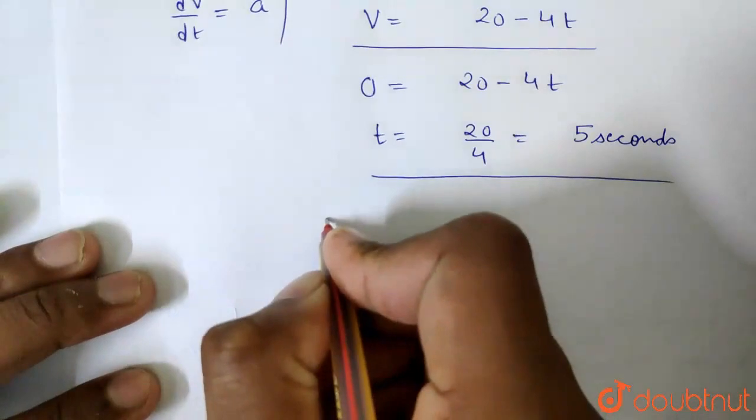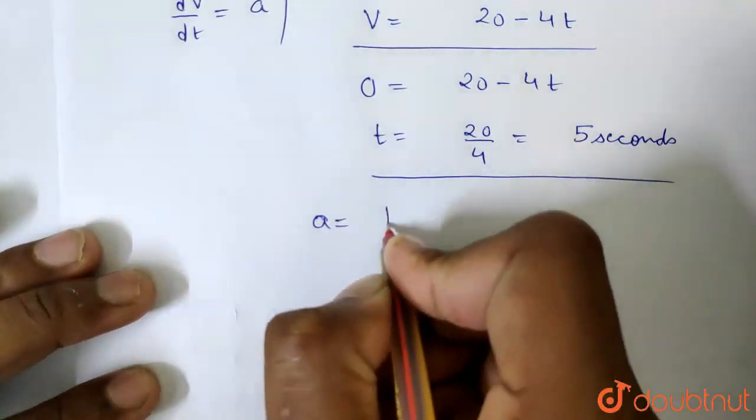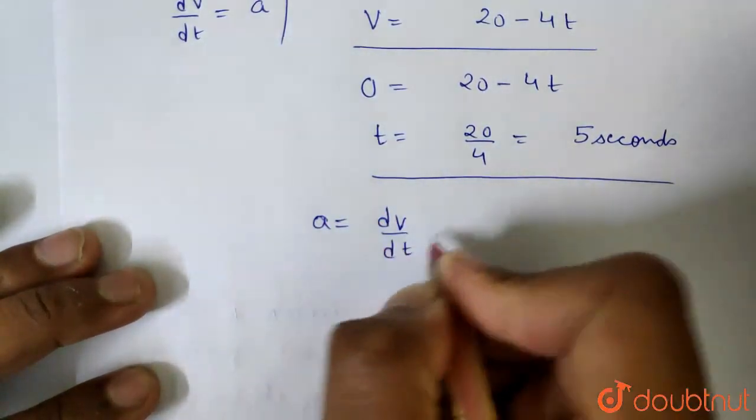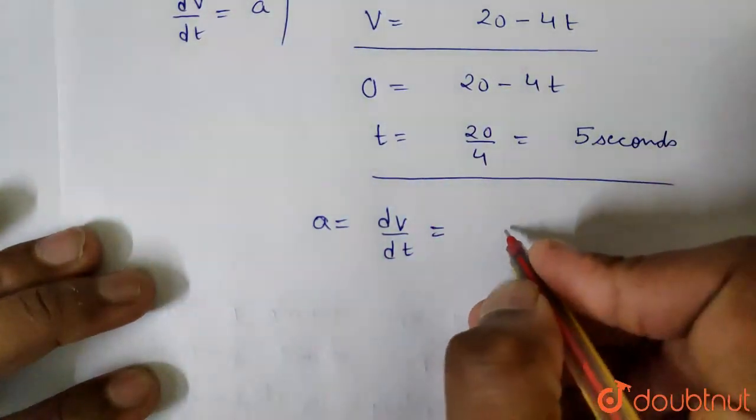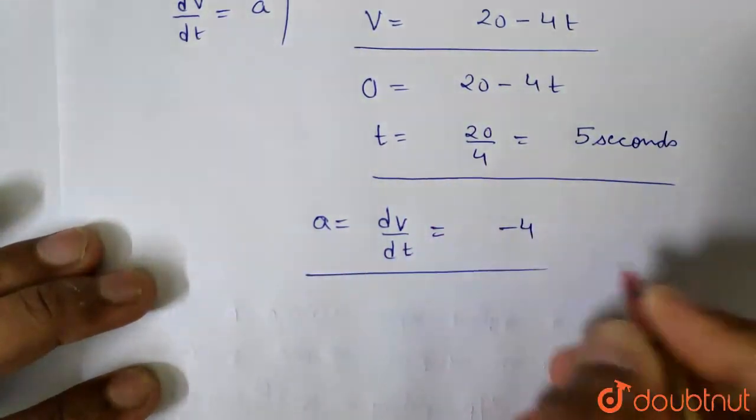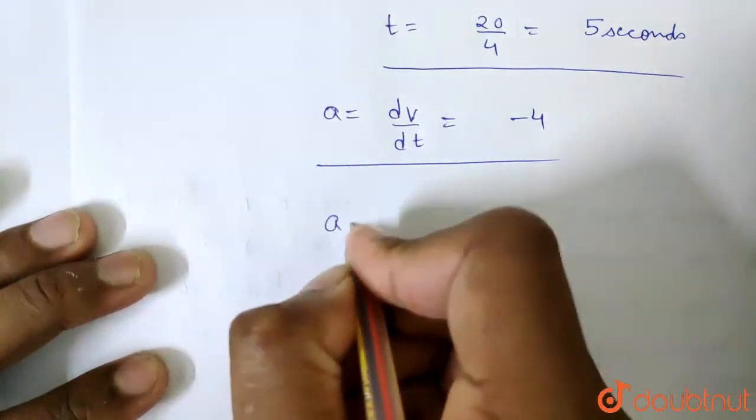Now what do we do for acceleration? What happens to acceleration? Acceleration equals dv/dt. v = 20 - 4t, so the differentiation is -4. The acceleration is actually constant.